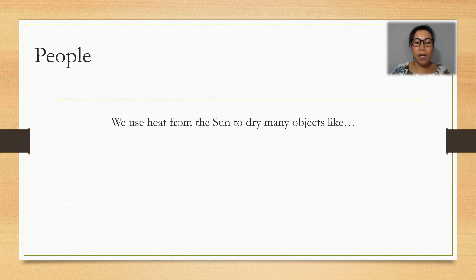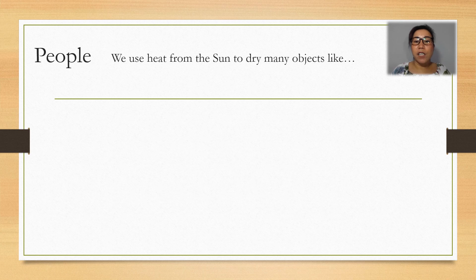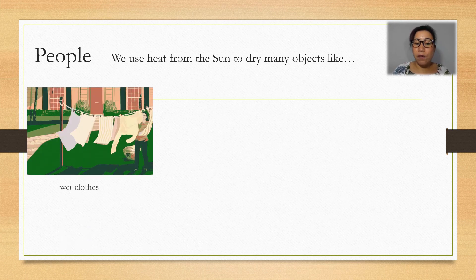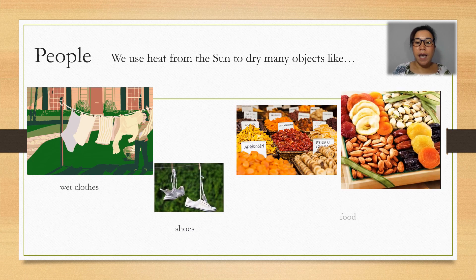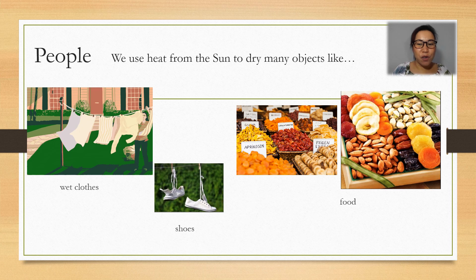For the people, we use heat from the sun to dry many objects. Like wet clothes, wet shoes, and even food. Have you tried to eat dry food? They are delicious and healthy.